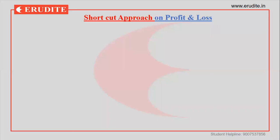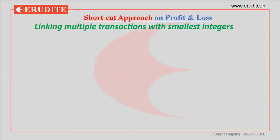Let us discuss a shortcut approach on profit and loss. In profit and loss, we can find questions wherever multiple transactions have been given in percentage format and we need to link them all. If we can link them all as the smallest integers, then it would be much easier and not that much calculation gets involved.